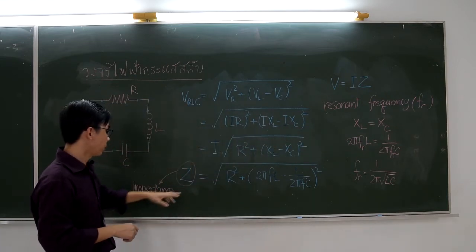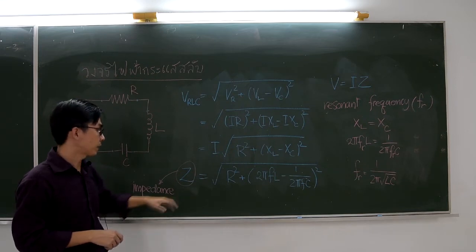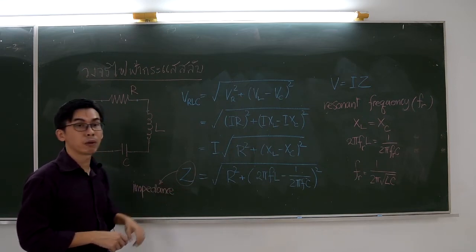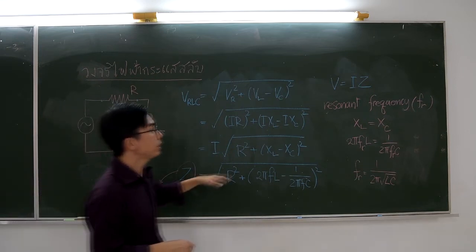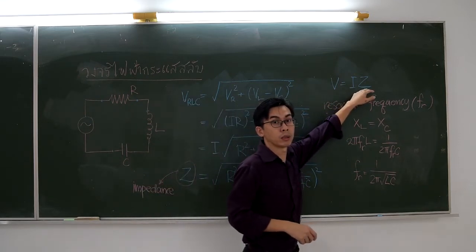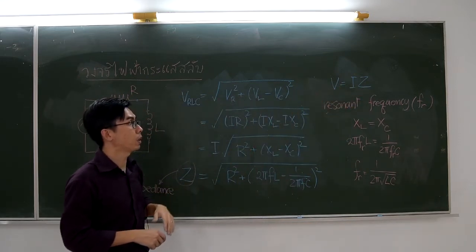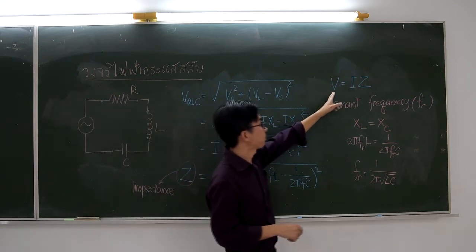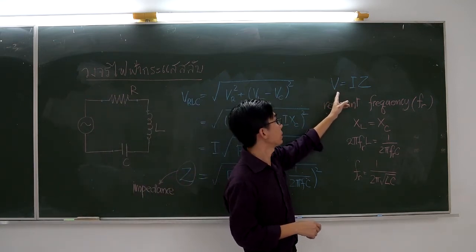What's left is the square root of R squared plus XL minus XC squared. This term is called impedance or Z.